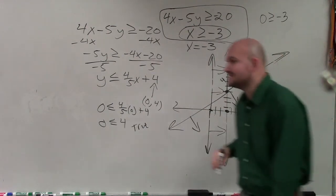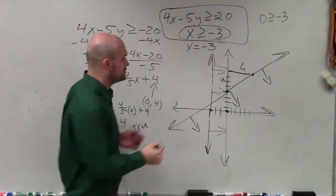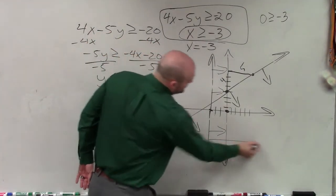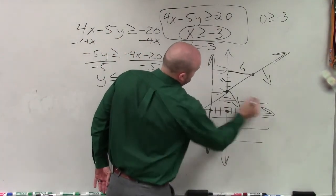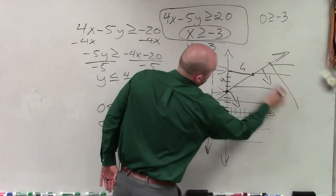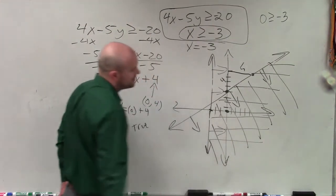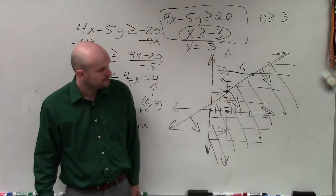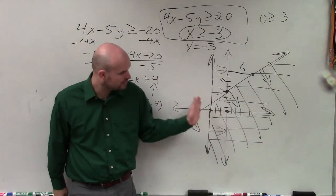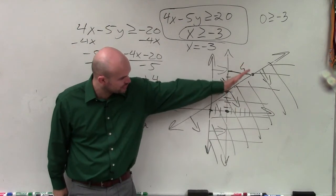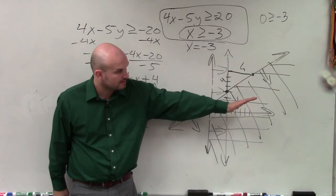Now, the reason, ladies and gentlemen, why I did the arrows is because I only want you to shade where it's true for both equations, which you guys can see is only going to be in that region. It's true to the right of the line. And it's true below the line. Right?